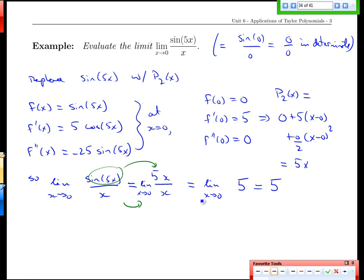If there's no x's, we don't have to really do the limit. And so this limit of the complicated function sine over x can be computed as 5 exactly using this Taylor polynomial replacement for sine of 5x.